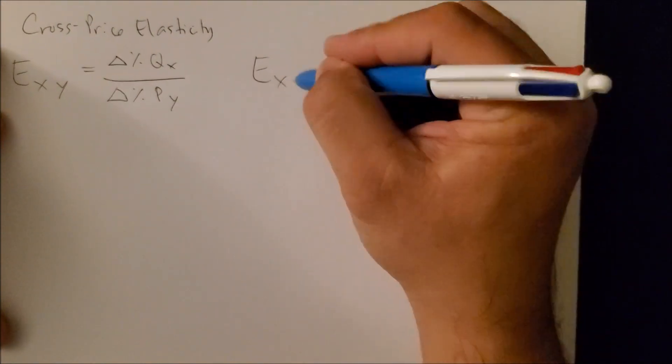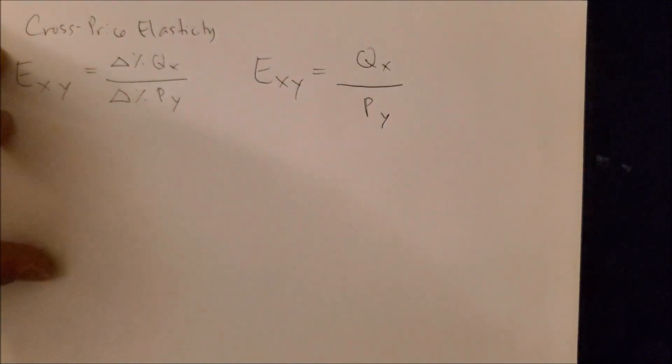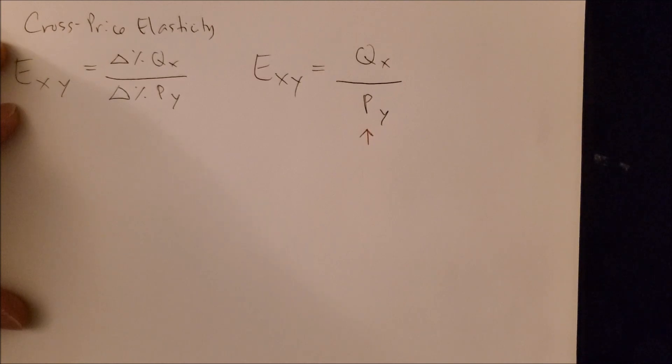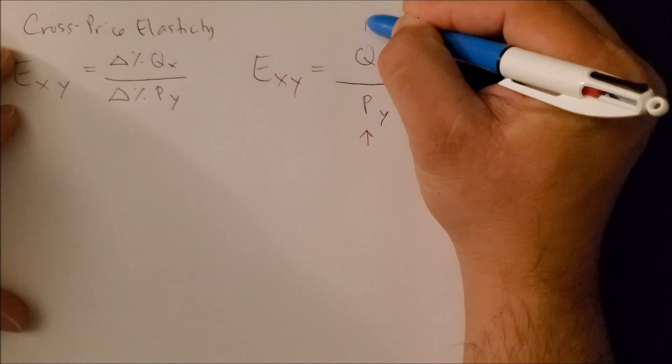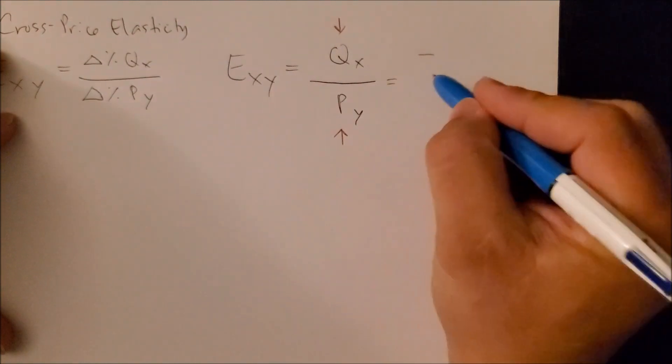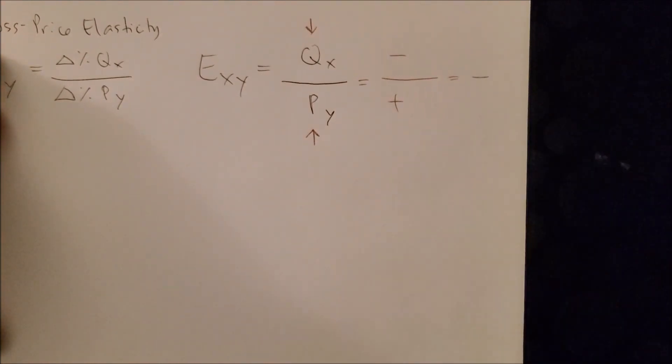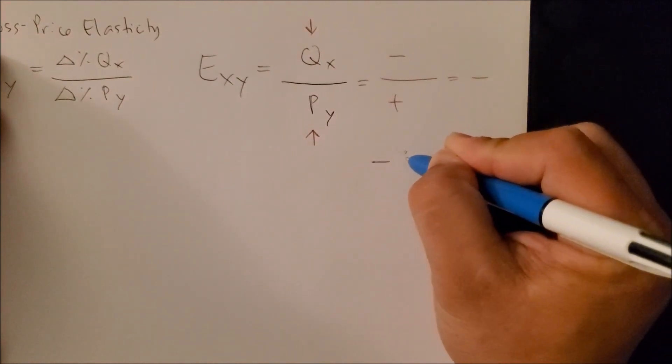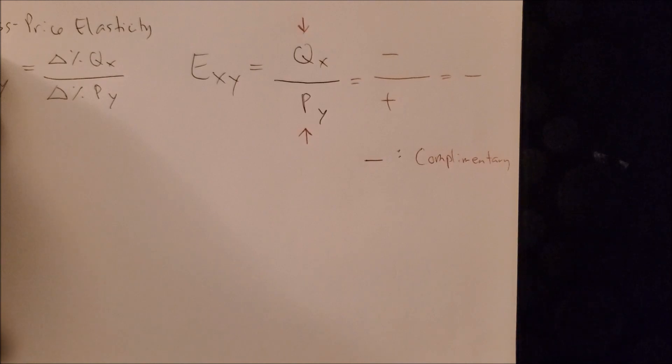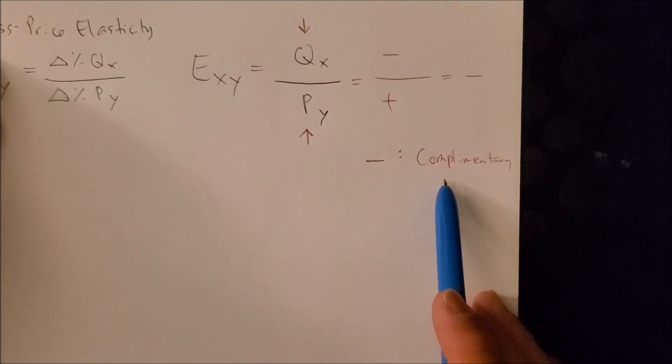For example, if we were to have E sub-X sub-Y, and here we have the quantity of good X over the price of good Y, what happens if the price of good Y increases? And let's say that consumers are going to consume less of good X. Notice that we're going to have a negative value on the numerator and a positive value on the denominator. When we have a negative over positive, we get a negative value. And this represents a negative sign, a complementary relationship between good X and good Y.